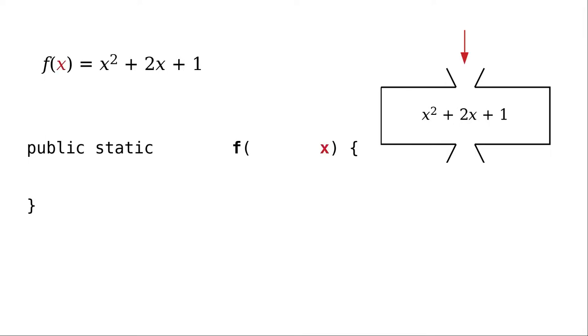We then give the name of the method and our parameter name. Here's where we part company with the world of algebra. In algebra, we just sort of know that the domain and range of f is the real numbers. In Java, we must specify the type of the parameter and also the type of the value that the method returns.